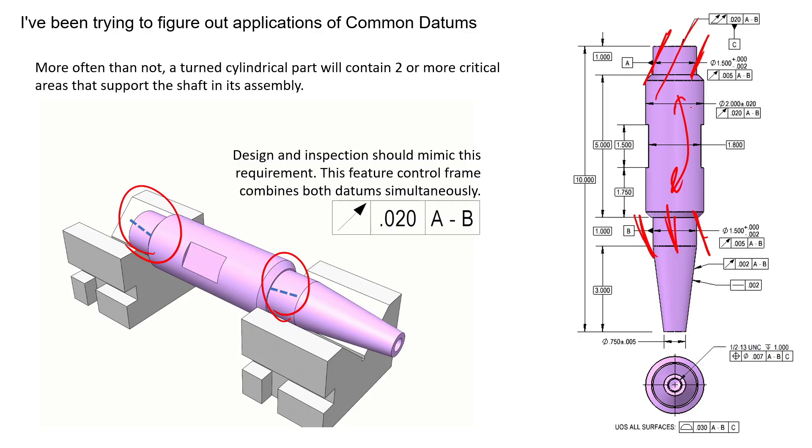If the datum feature for datum feature B is in a different orientation than datum feature A, these two axes will be separate axes. They won't be coaxial, they won't be in the same orientation. That's just how the real world works—nothing is perfect. But what we're going to do is we're not going to rotate around this axis or this axis. We're actually going to take these two features and create a brand new axis, and we're going to call that datum axis A-B.